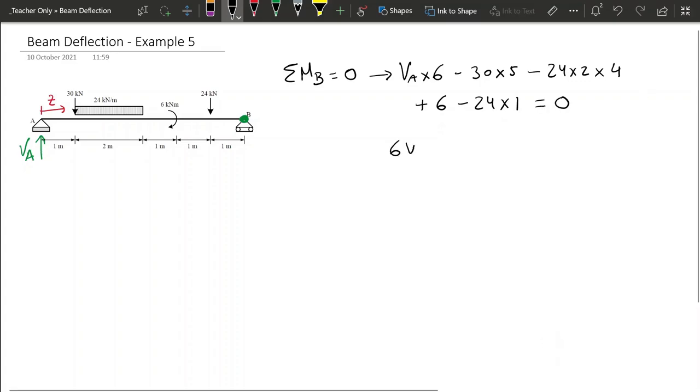From this equation we get that 6VA minus 360 equals zero, and therefore we get that VA is going to be equal to 60 kilonewtons and pointing upwards.